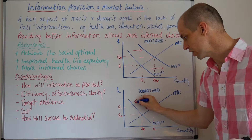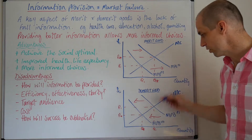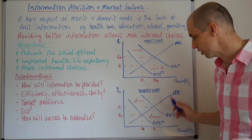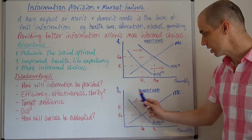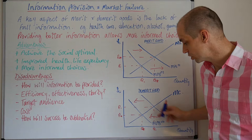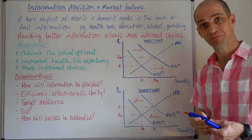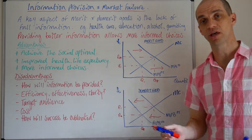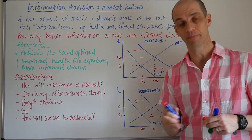For the demerit good, it works the opposite way — here we're trying to reduce consumption, shifting this curve to the left. Consumption was over-consumed, so we're at P1, Q1, but the information campaign, if effective, will reduce the level of consumption and reduce that marginal benefit in line with P star, Q star.